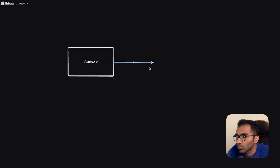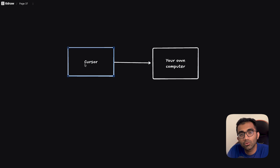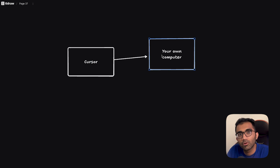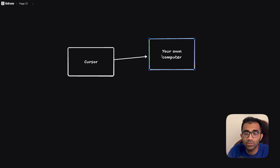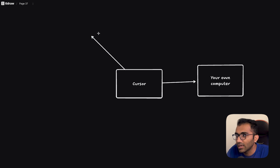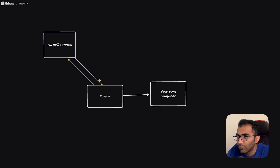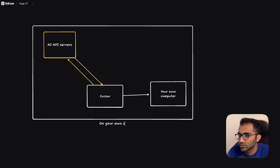It's running on your own computer. When you start Cursor as an IDE it starts off as something running as a VS Code instance on your own computer. When there is an LLM call and you get the response back, the edit gets applied completely on your own computer. The only thing Cursor uses externally is API communication — either with its AI API servers or directly with API providers.